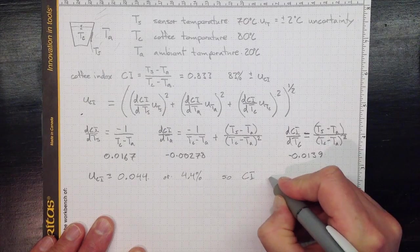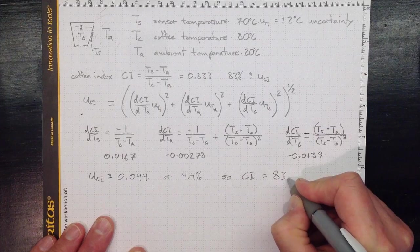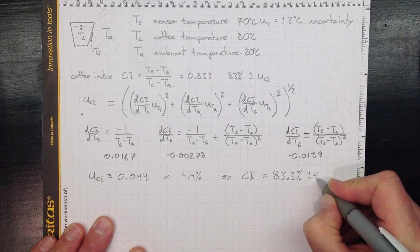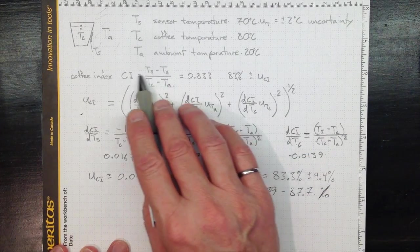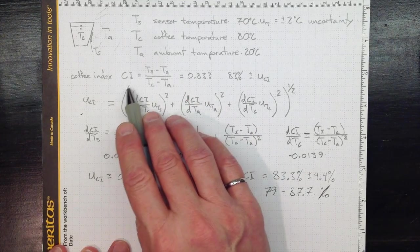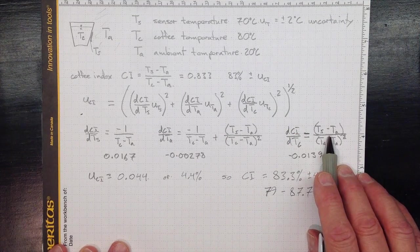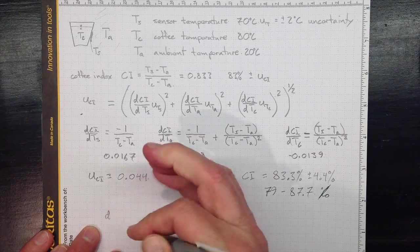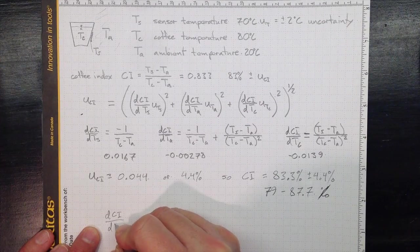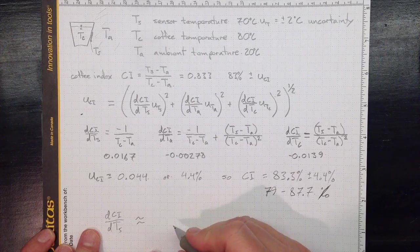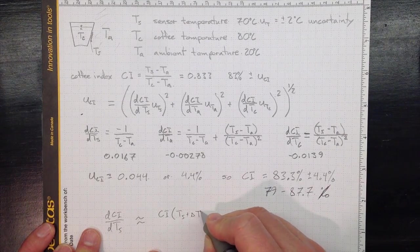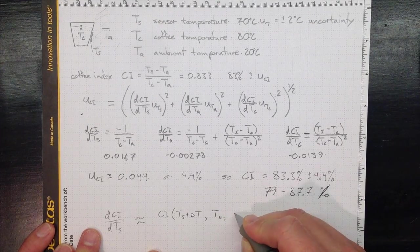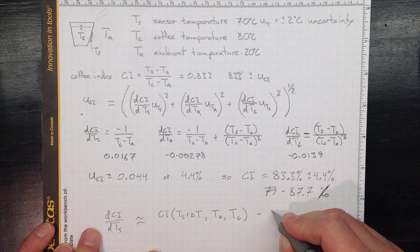So, the CI that I measured is equal to 83.3% plus minus 4.4%. So, these derivatives were fairly easy if you remembered first year calculus. But if we had a more complicated relationship for whatever we were looking at here, we would find it maybe more difficult to calculate those derivatives analytically. However, we could approximate those derivatives. DCI, DTS is approximately equal to the CI value that we get if we put in TS plus some small delta T along with T ambient and T coffee,